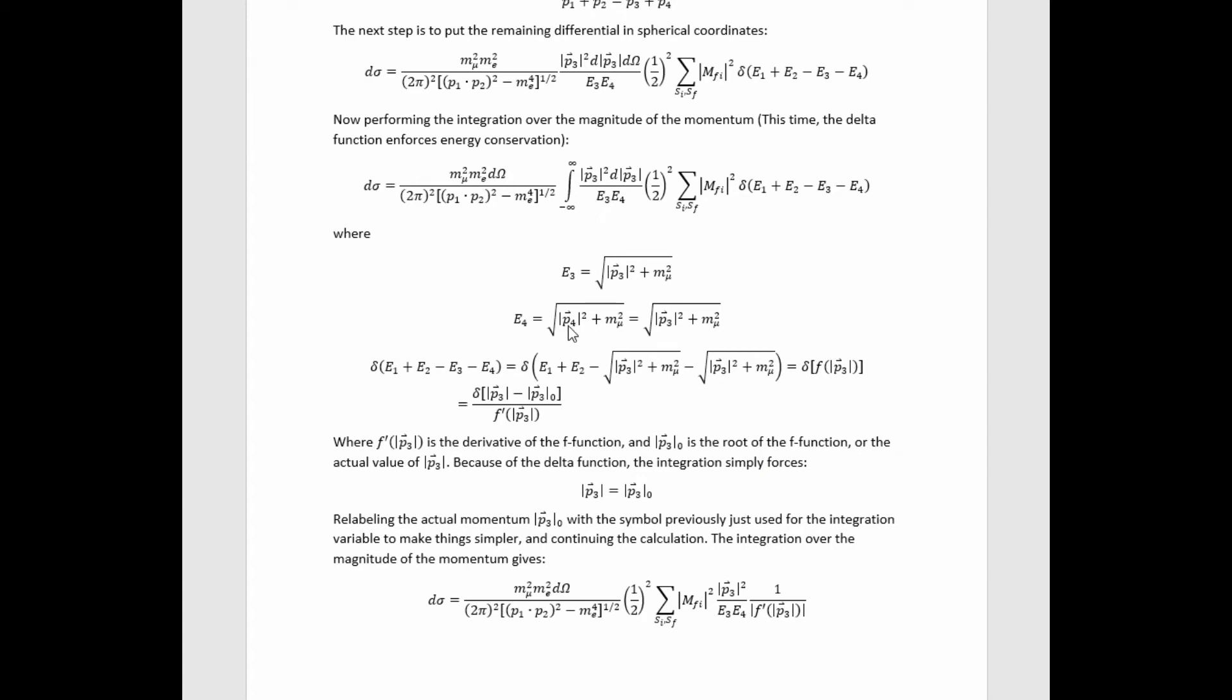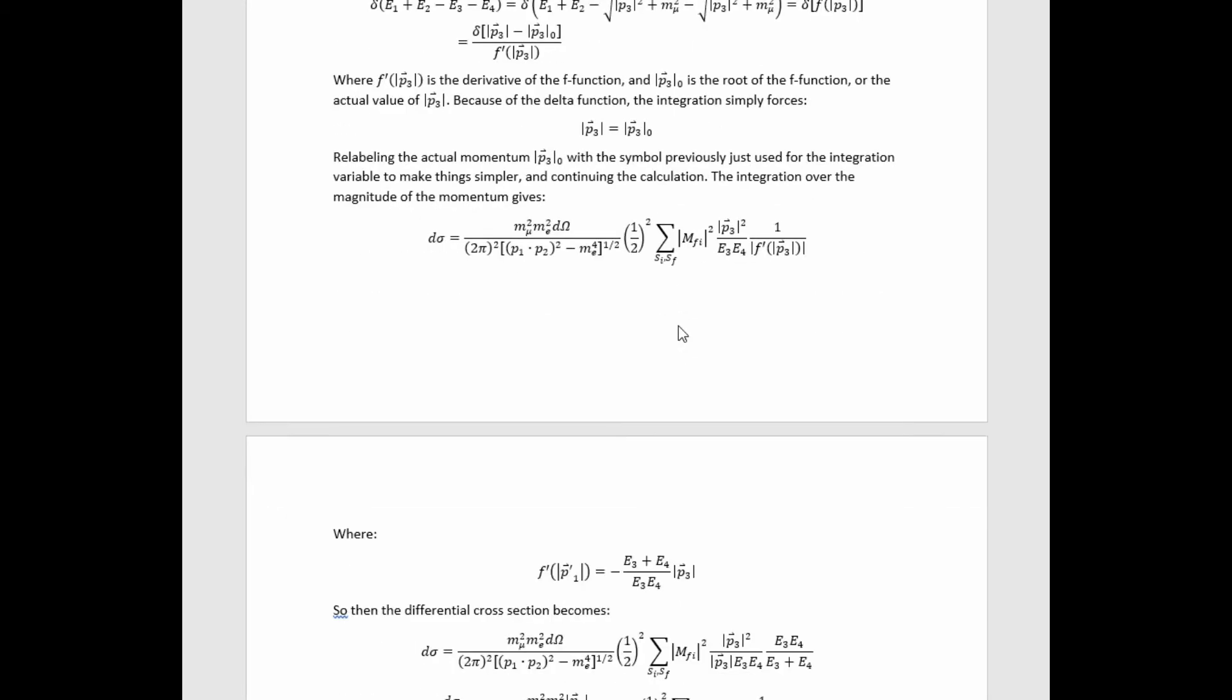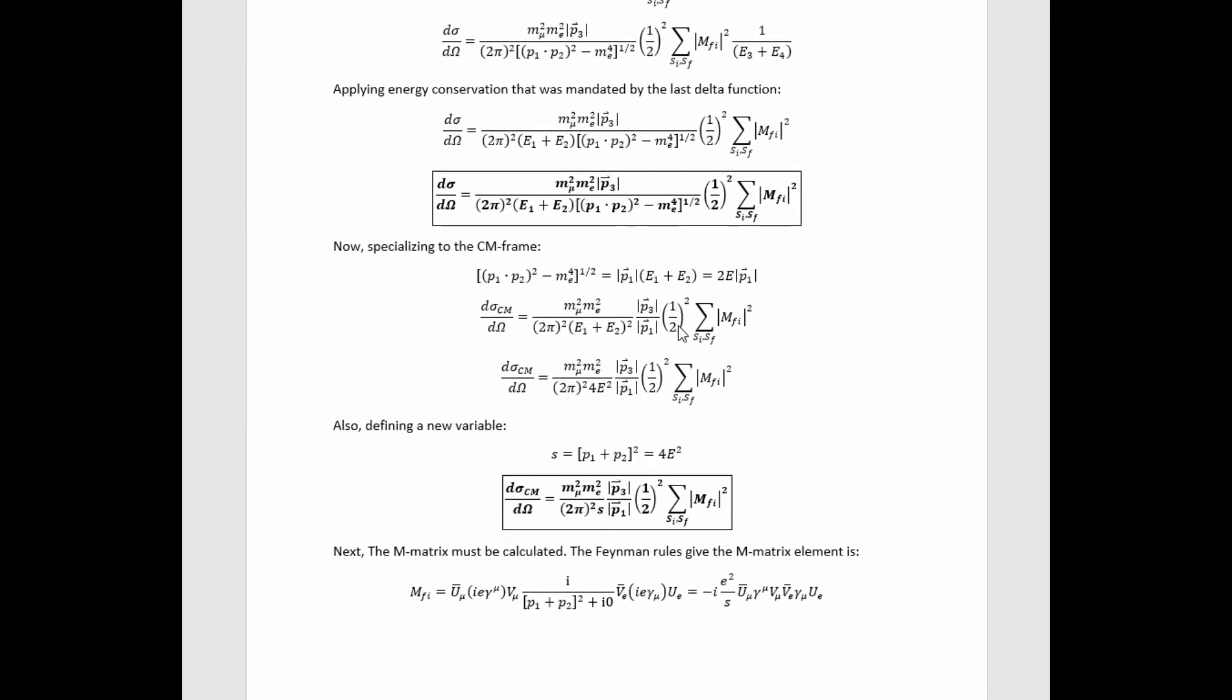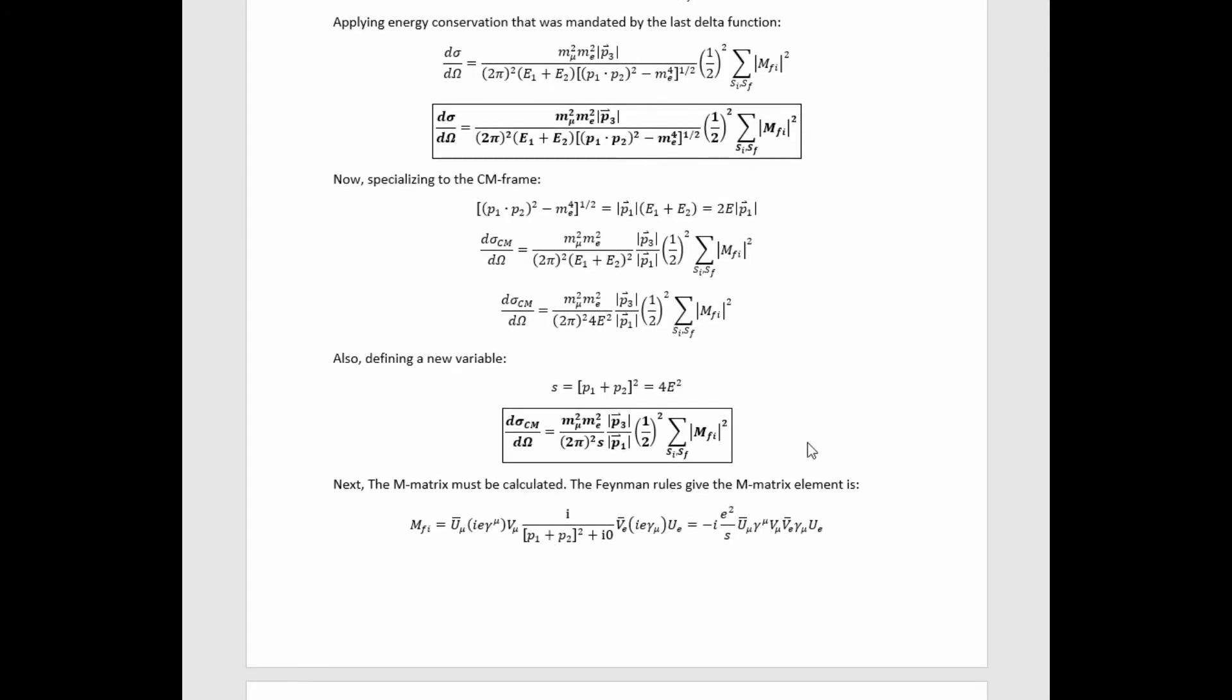We already used the center of mass frame to arrive at the fact that P4 magnitude is equal to P3 magnitude there, but we didn't use the fact that we're specializing to the center of mass frame to simplify it any further. We can use it to simplify things quite a bit more and doing that ultimately gives us this result.